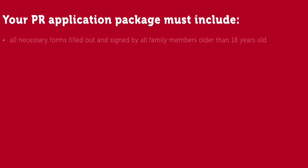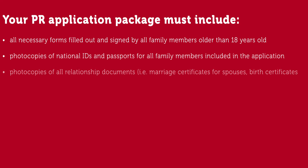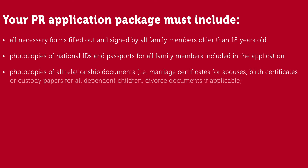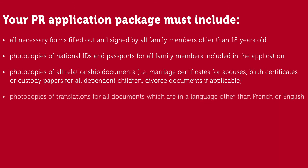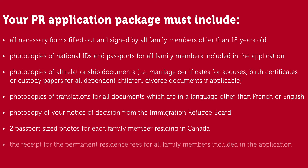Your PR application package must include: all necessary forms filled out and signed by all family members older than 18 years old; photocopies of national IDs and passports for all family members included in the application; photocopies of all relationship documents — for example, marriage certificates for spouses, birth certificates or custody papers for all dependent children, and divorce documents if applicable; photocopies of translations for all documents in a language other than French or English; a photocopy of your notice of decision from the Immigration Refugee Board; two passport-sized photos for each family member residing in Canada; and the receipt for the permanent residence fees for all family members included in the application.